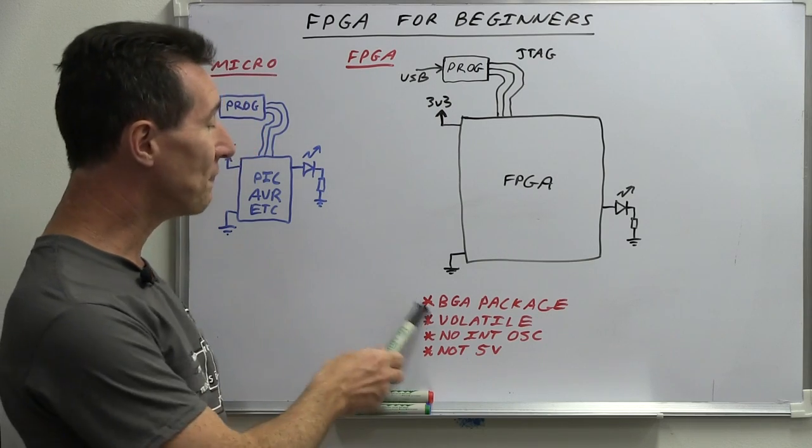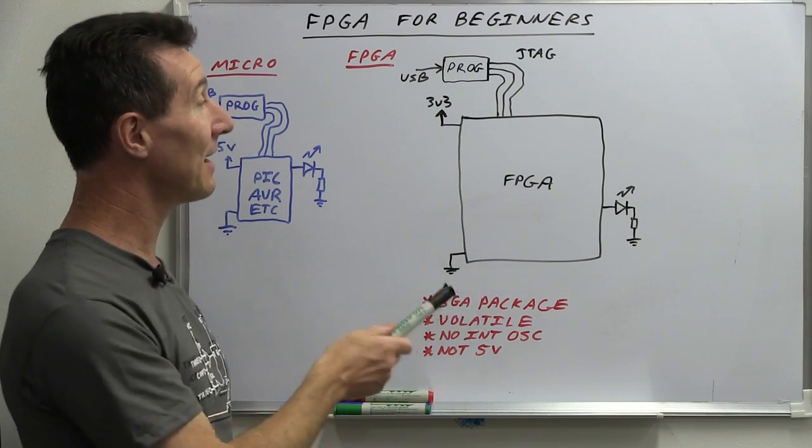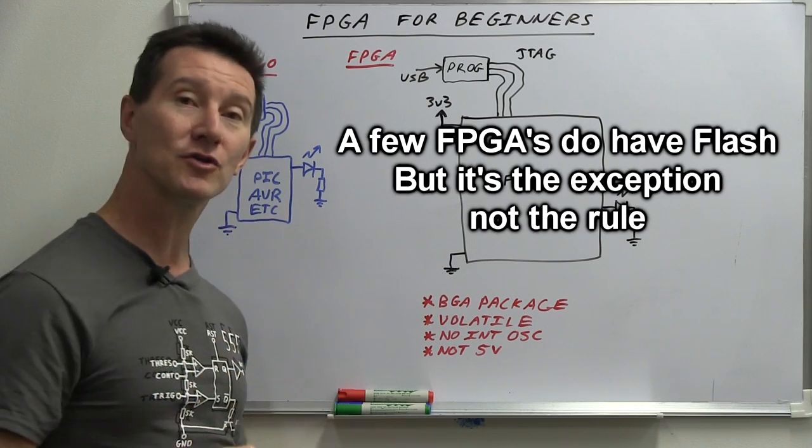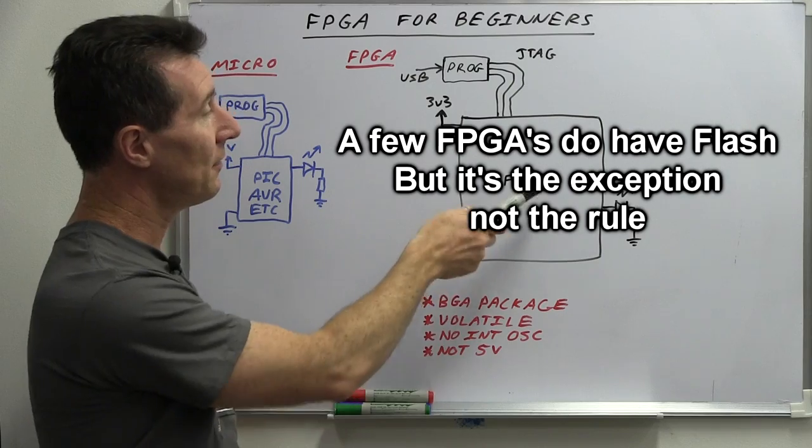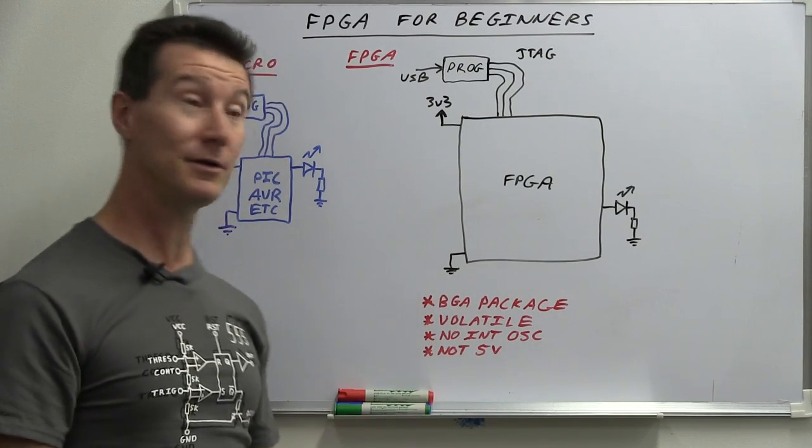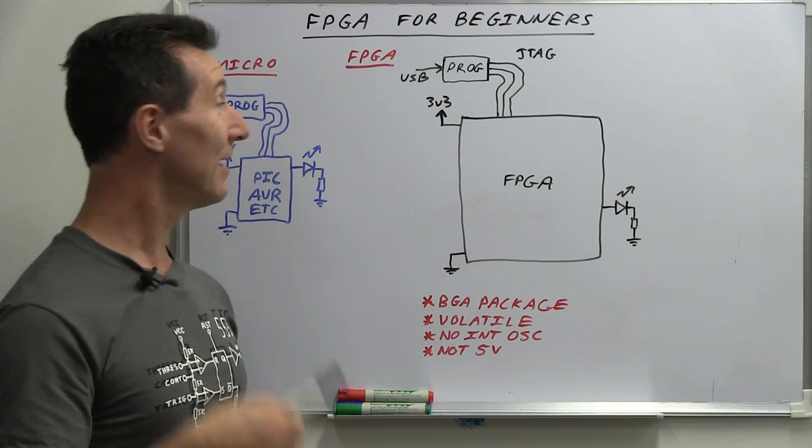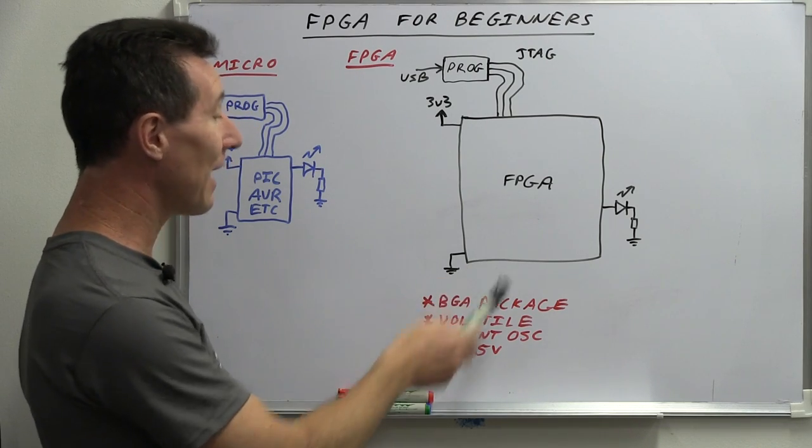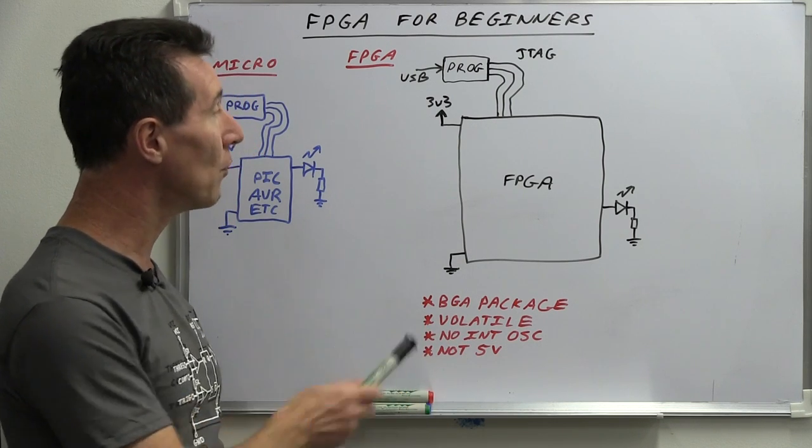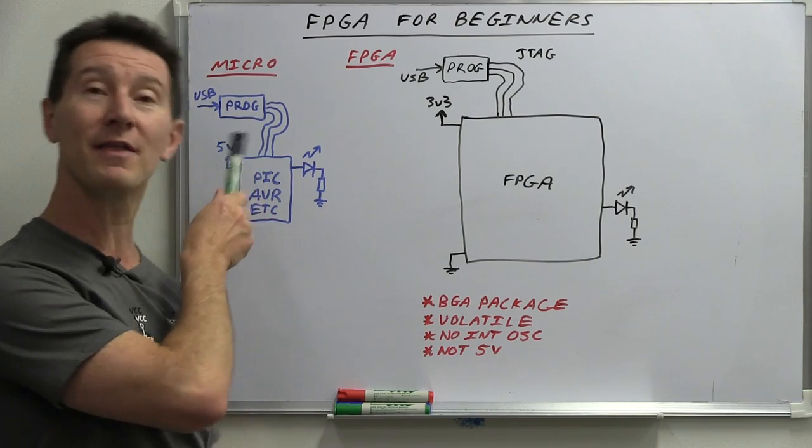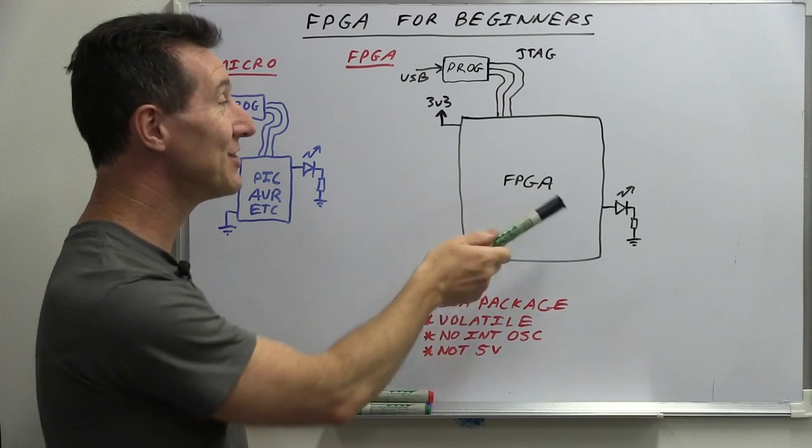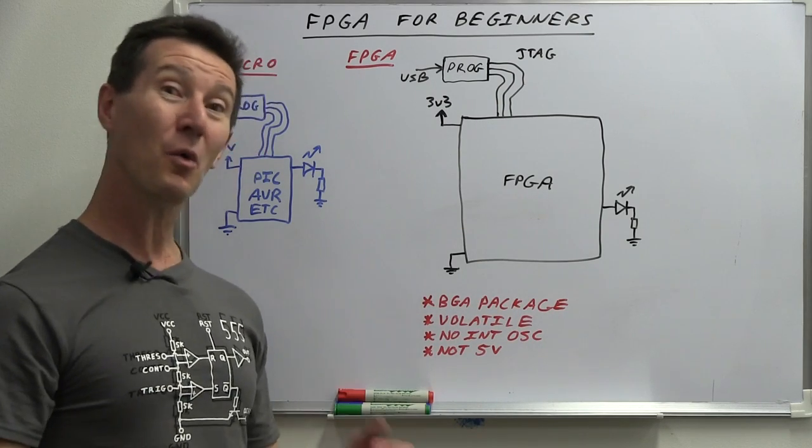The next thing is that these things are volatile. What that means is that they don't have flash memory in them like your microcontroller does. So you can just program it via the JTAG programmer, but as soon as you remove the power, poof, your design's gone. You have to download it again, hopeless. So we'll take a look at that. Next thing is that there's no internal oscillators in these things like there are on your microcontroller. So once again, you've got to add in an external oscillator just to get the damn thing working.